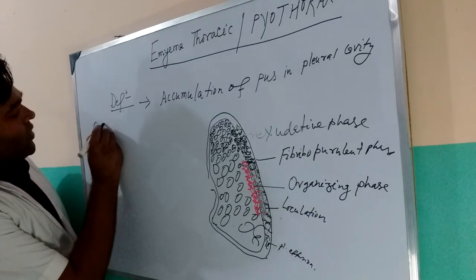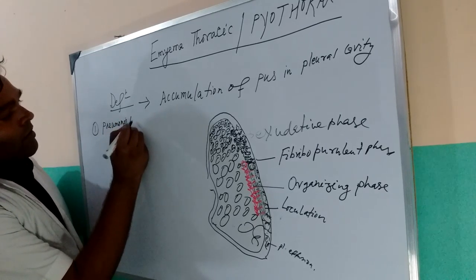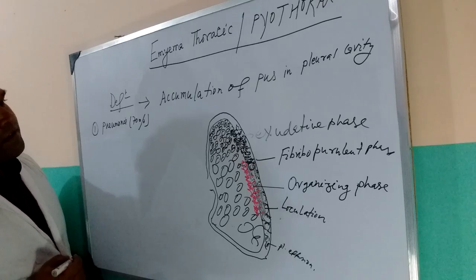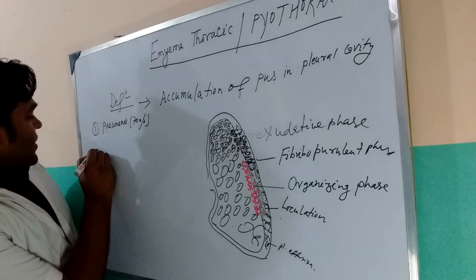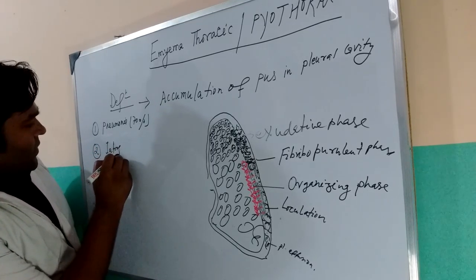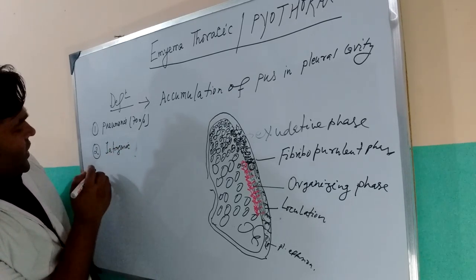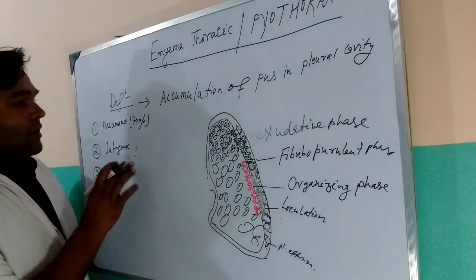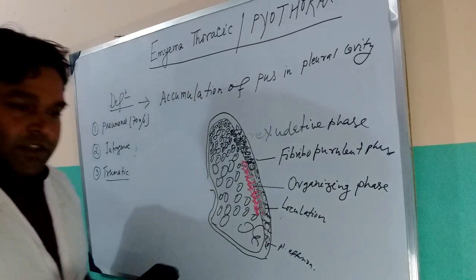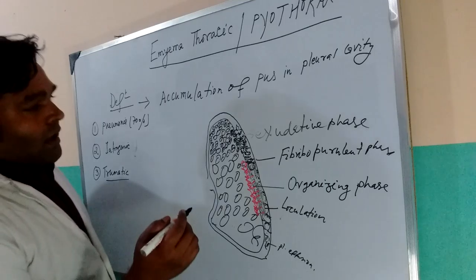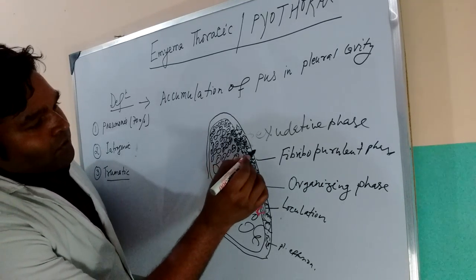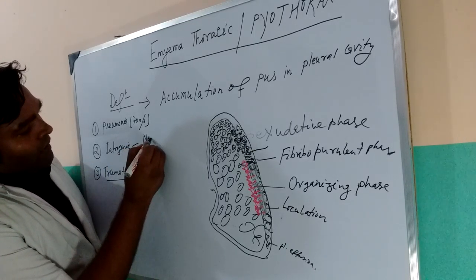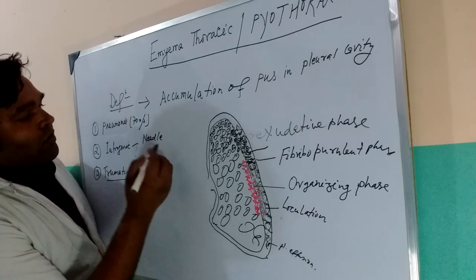The causes of pyothorax: pneumonia in about 70 percent of cases, usually bacterial but may be viral or other infectious organisms. The second cause is iatrogenic and traumatic. Iatrogenically, when there is accumulation of serous fluid in the pleural cavity and needle biopsy is attempted from the fluid, it may infect and the pleural effusion may convert into pyothorax.